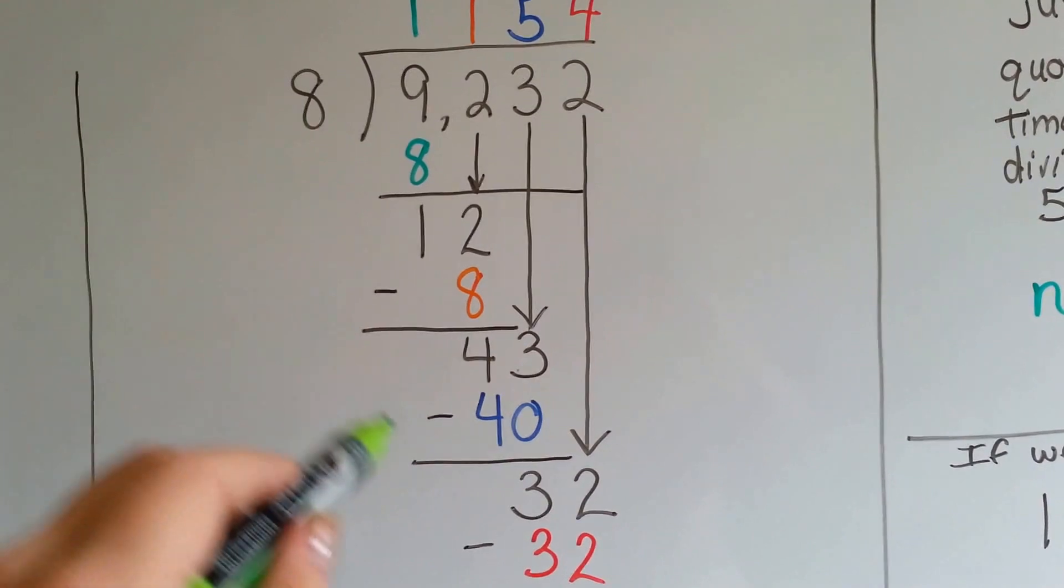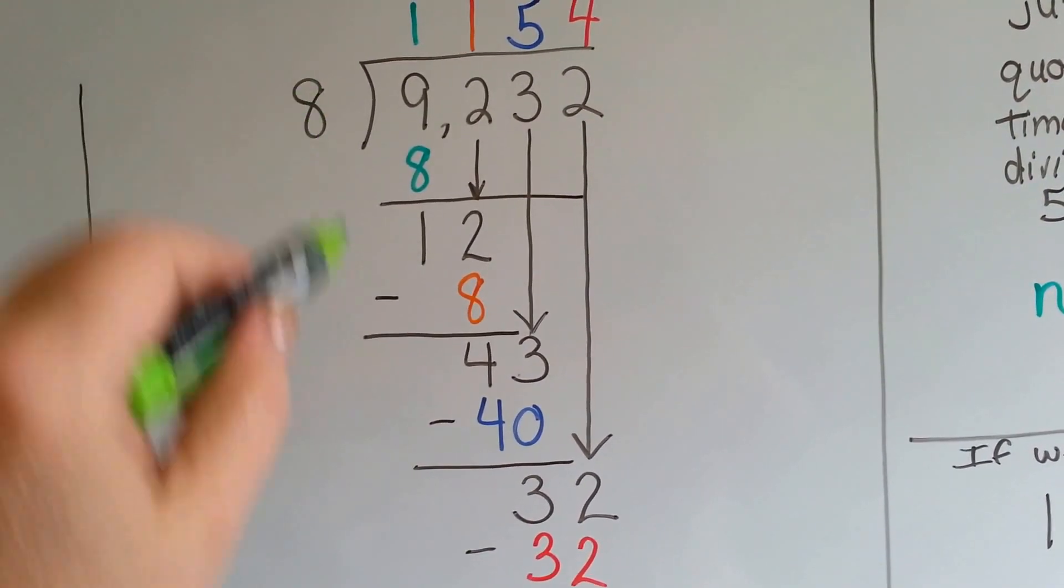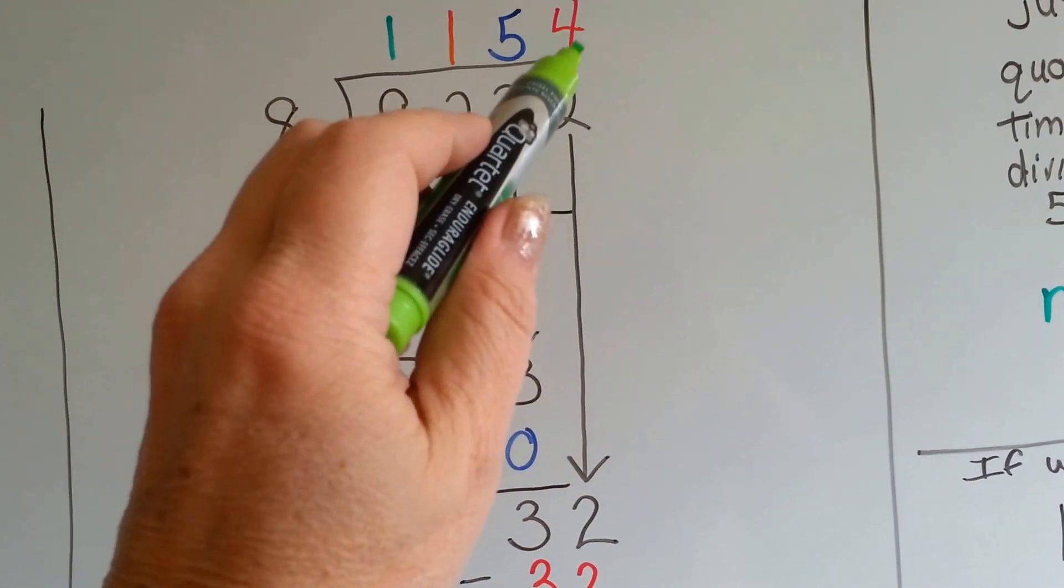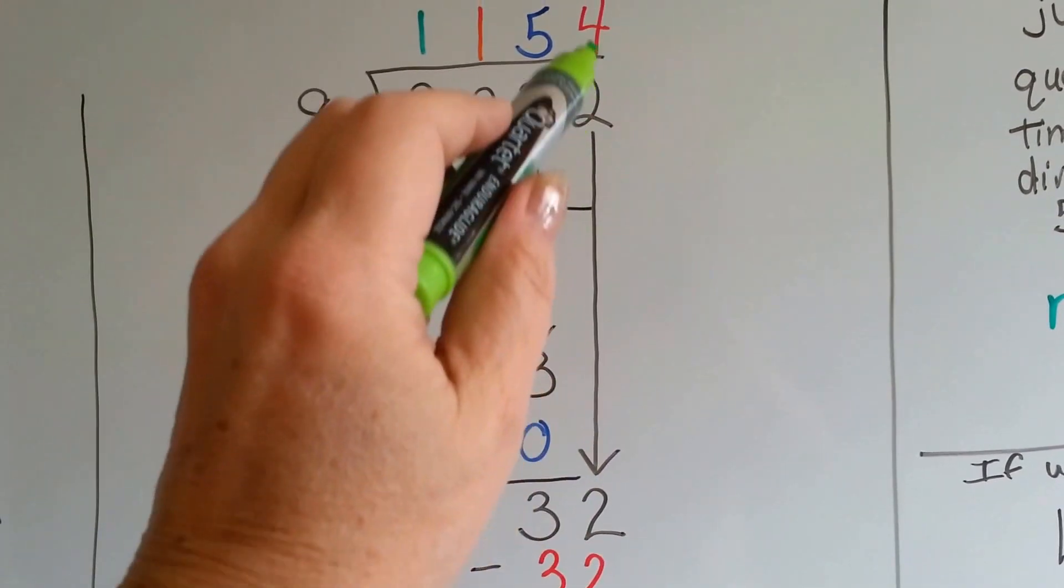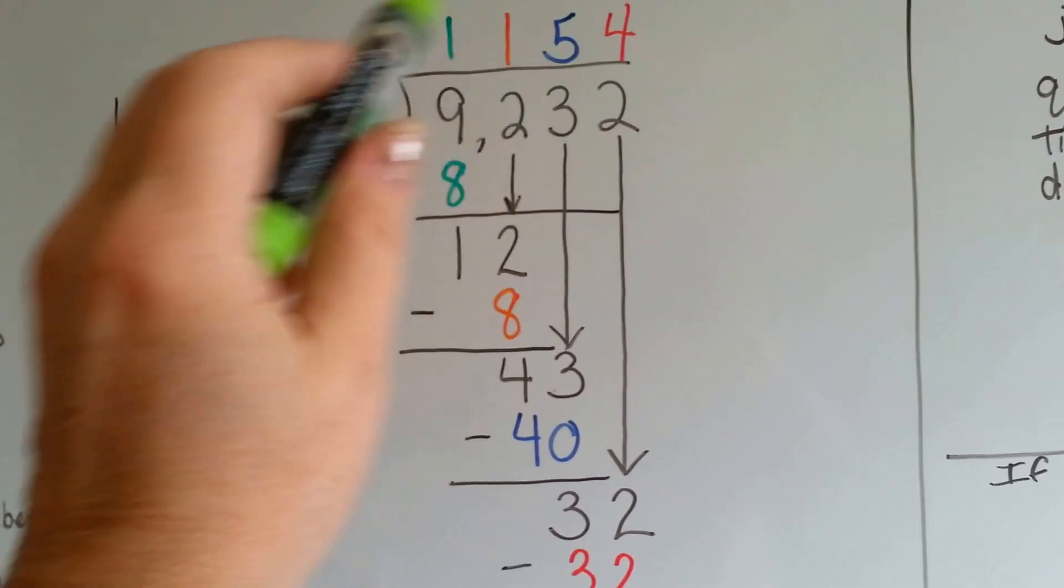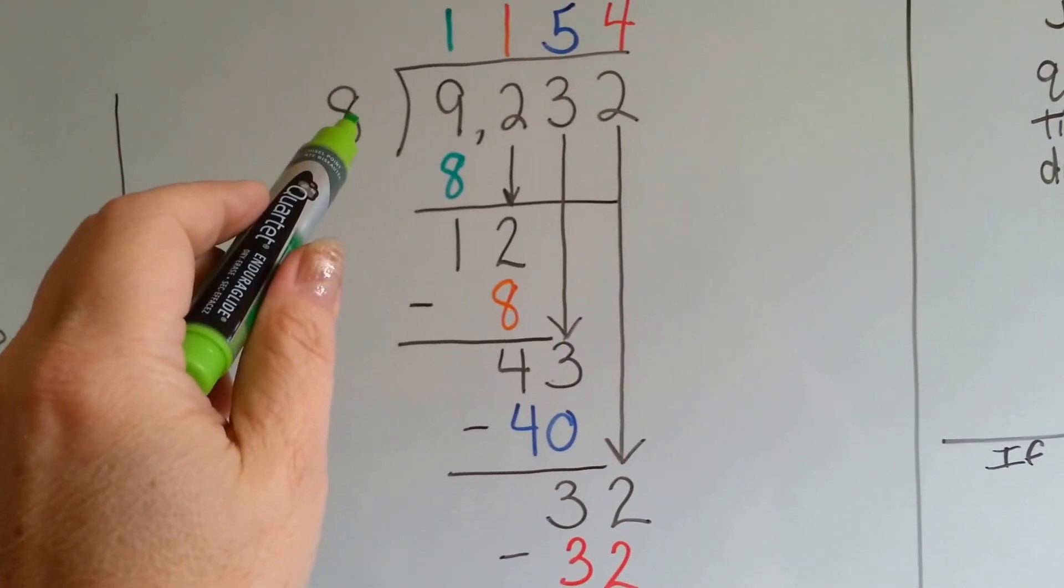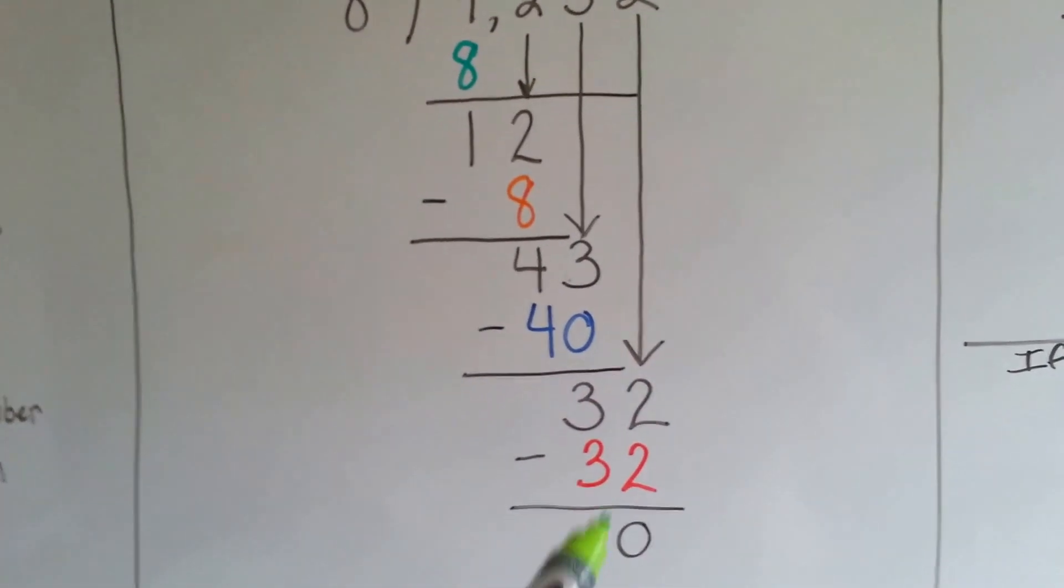Then we say, how many times can 8 fit into 32? 8 can fit into 32 four times. We write it above the 2 that we dropped down. We do our multiplication of 8 times 34, which is 32. We do our subtraction and get 0.